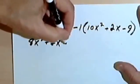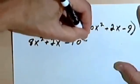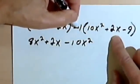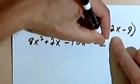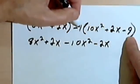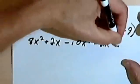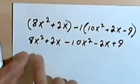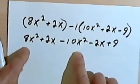So I'm going to have -10x². Negative 1 times 2x will be -2x. And then -1 times -9... well, negative times negative is positive. So that's positive 9. Now I've gotten rid of my parentheses so I can just look for like terms and combine them.